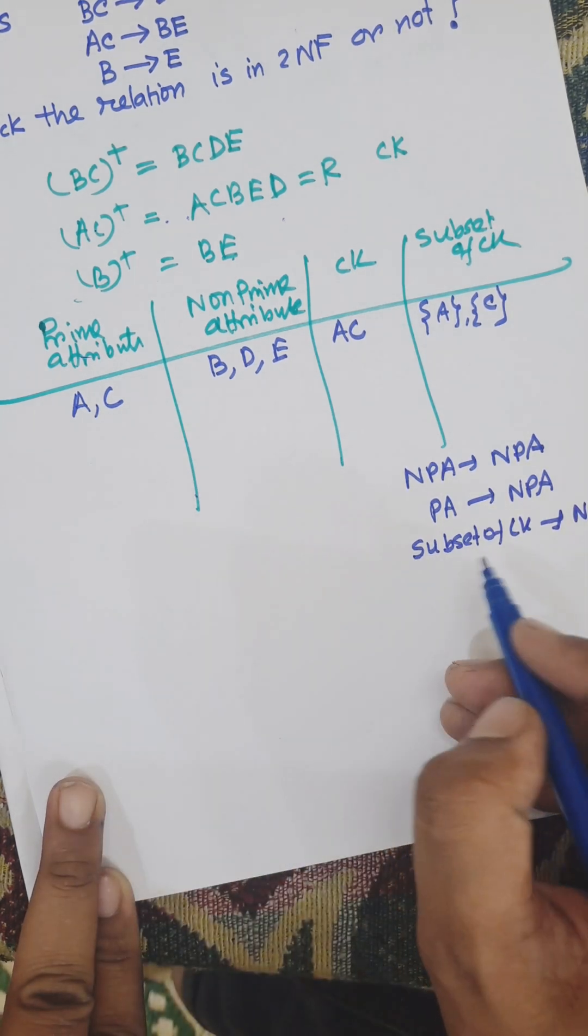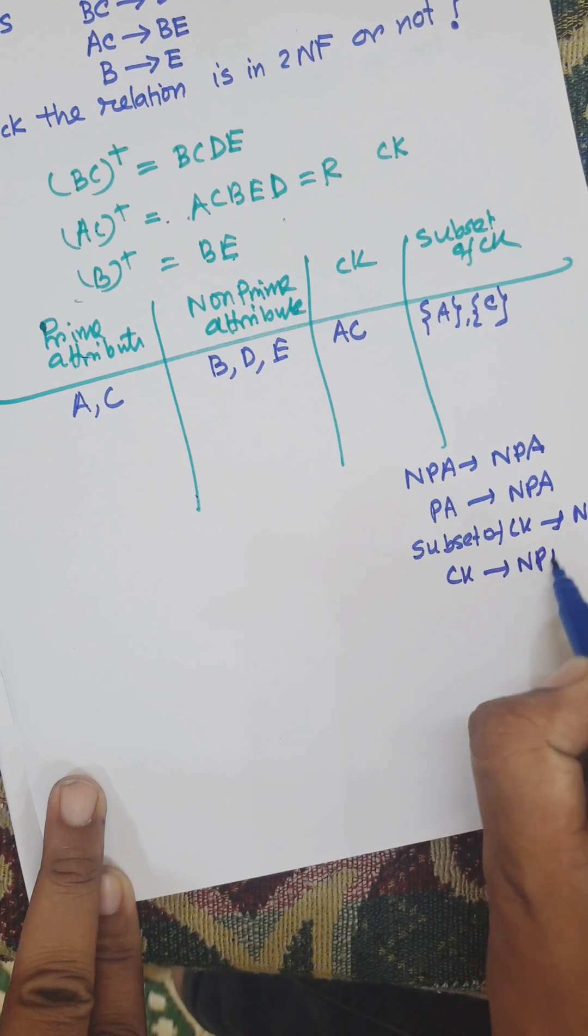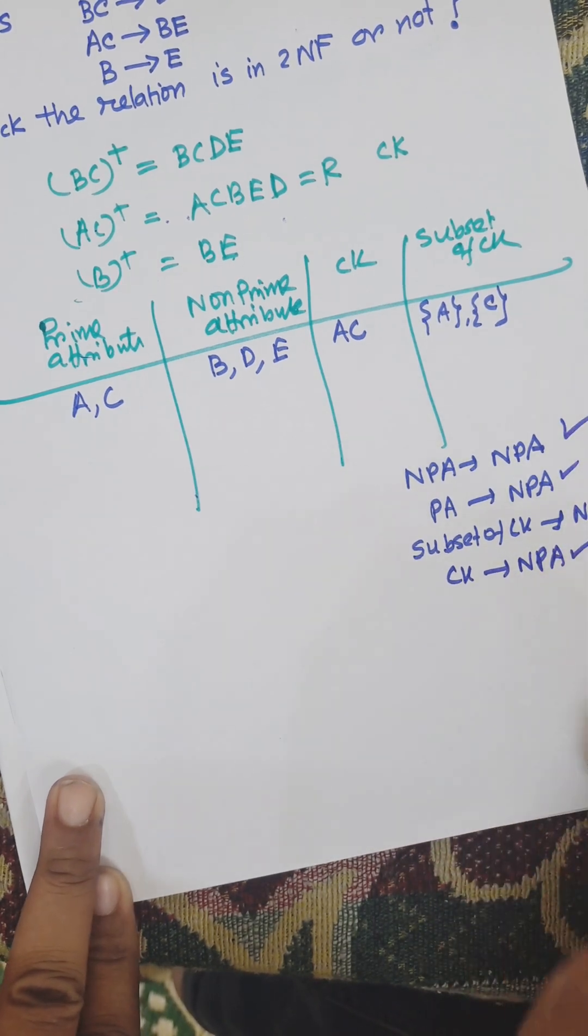Subset of CK→NPA is not allowed. CK→NPA is allowed, but subset of CK→NPA is not allowed.